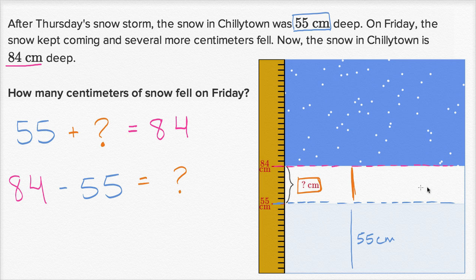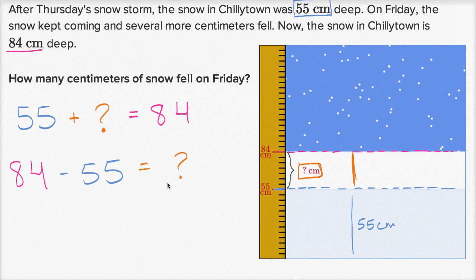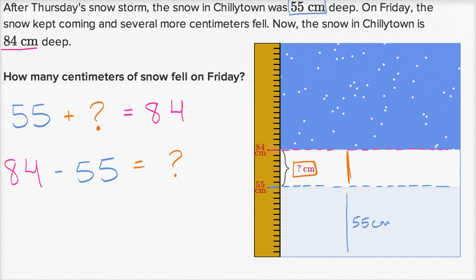One way to think about it is: if you had all the snow and subtracted out 55 centimeters of it, you'd be left with the question mark amount. Because the difference between 84 and 55 is what fell on Friday. So let's figure out what that is — I'll do the calculation down here.